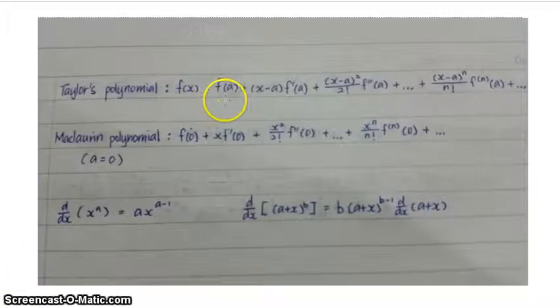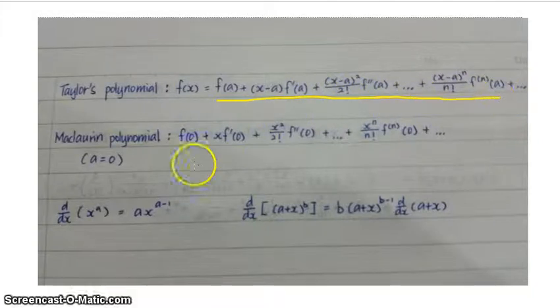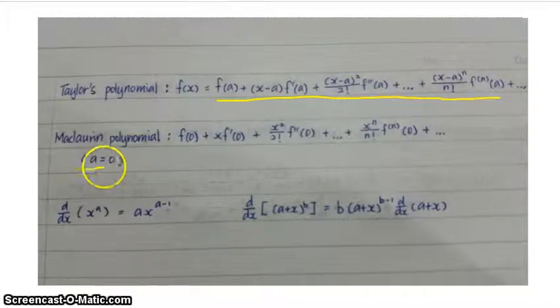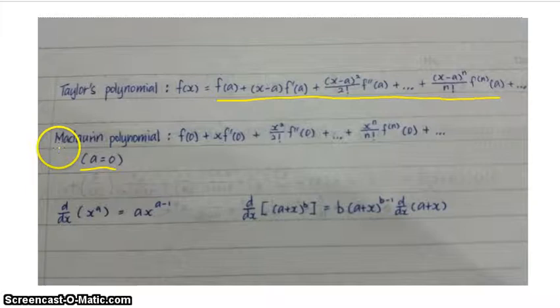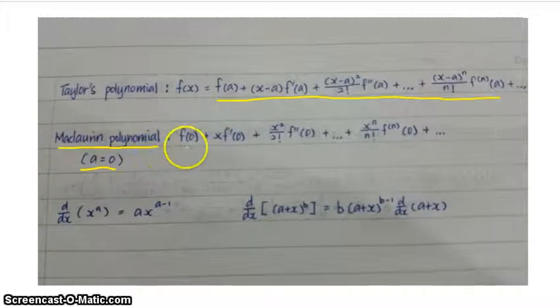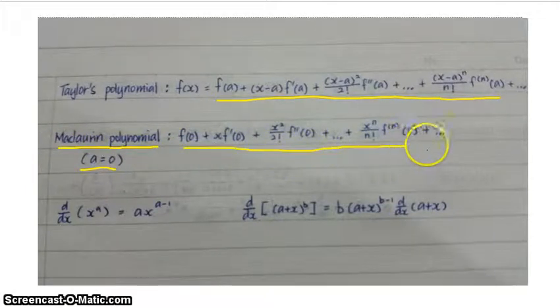This is the Taylor polynomial general equation. There is a special case where a equals 0. We call it Maclaurin polynomial. This is the general equation for the Maclaurin polynomial.